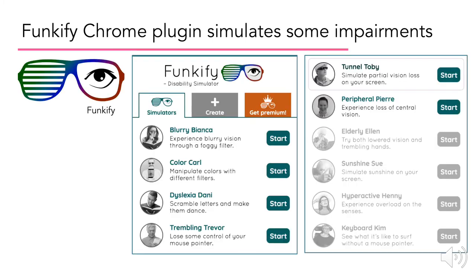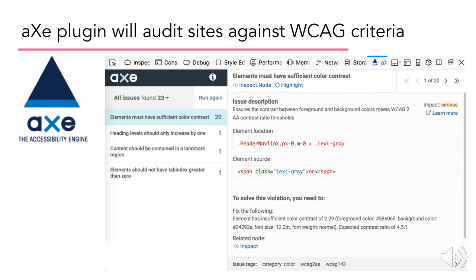There are a couple of plugins you can explore to learn more about accessibility. One is called Funkify, and it actually simulates different types of visual and other impairments by affecting the way your browser looks and behaves. There's also an axe plugin that will audit sites against WCAG criteria — if you're getting into development or if that's an area that interests you, you might like to play around with this type of plugin.